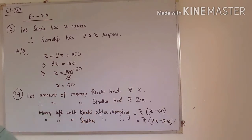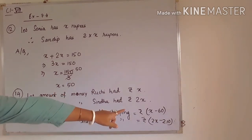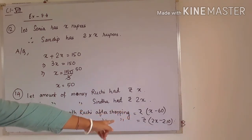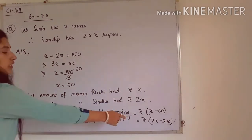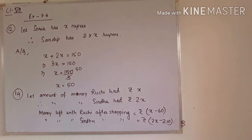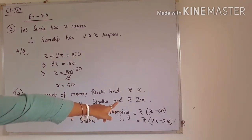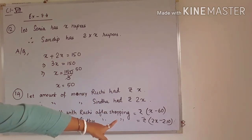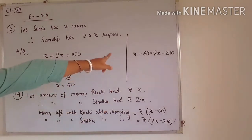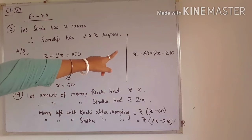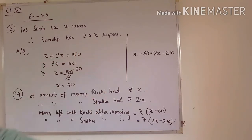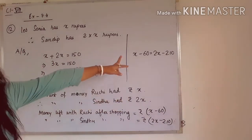The money left with Sindhu will be 2x minus 210, since her expenses are rupees 210. Now, the leftover money of both will be equal, as it is given in the question that both have the same amount left. So we equate the two expressions: x minus 60 is equal to 2x minus 210. Transpose 2x to the left-hand side and minus 60 to the right side to solve the equation, and finally you will get the value of x, which is the amount Ruchi had.